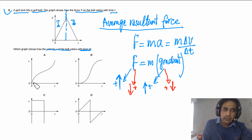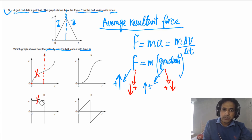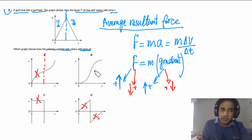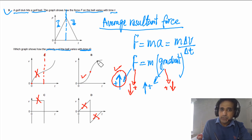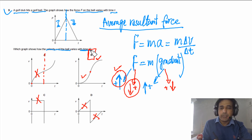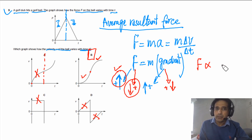Looking at the answer options: some graphs show a constant or decreasing gradient throughout — those are not possible. The correct graph shows gradient positive and increasing in the first part, then positive and decreasing in the second part — satisfying both conditions. The answer is B. The key concept is that force is directly proportional to the gradient of the V-T graph.